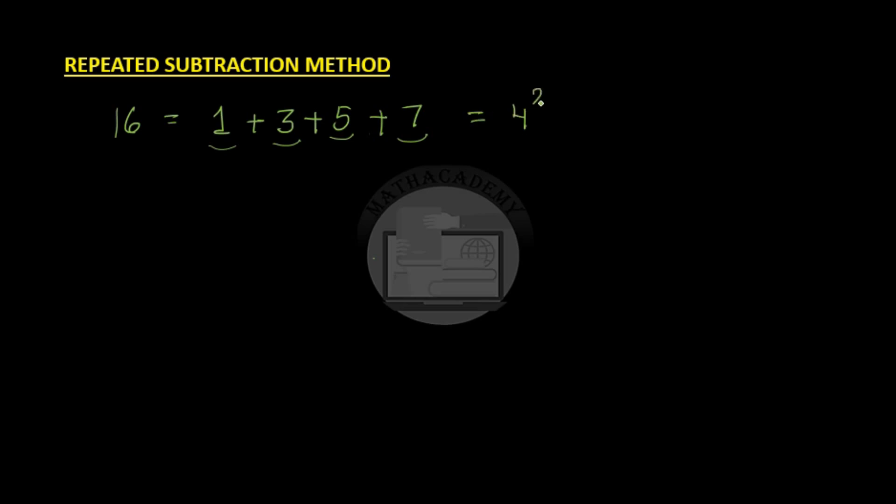Square root is an inverse operation of squaring. Square numbers are obtained by adding consecutive odd numbers, so the inverse of addition is subtraction. Hence, square root will be obtained by subtracting consecutive odd numbers.